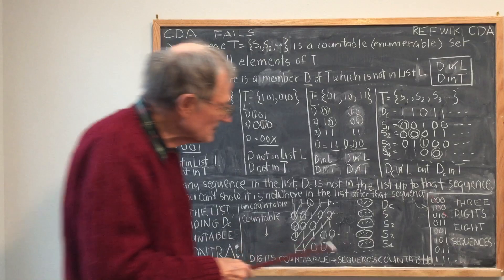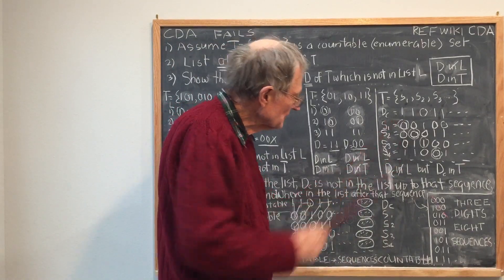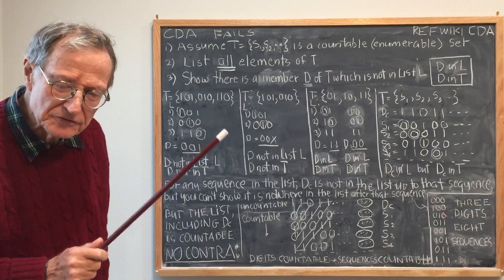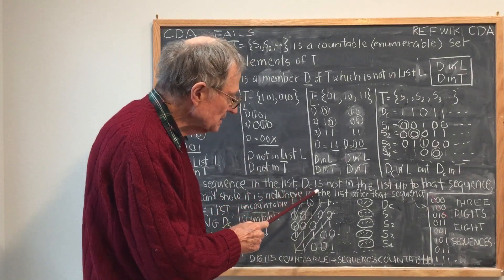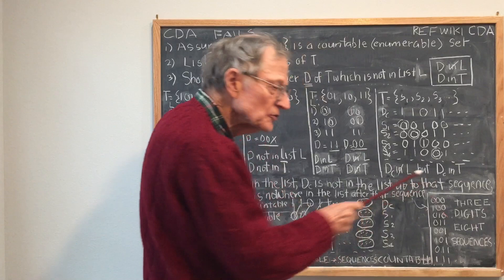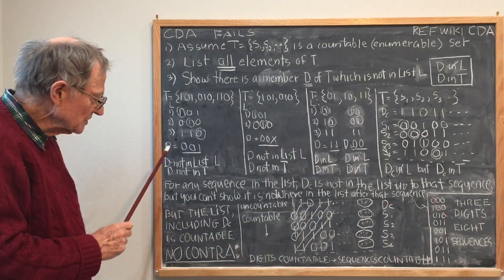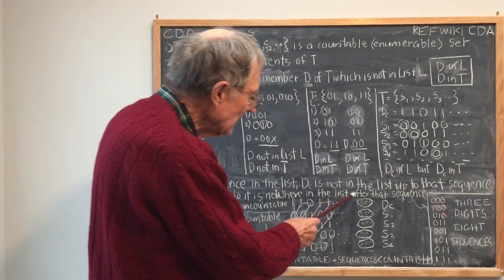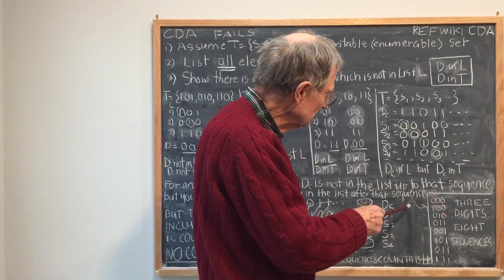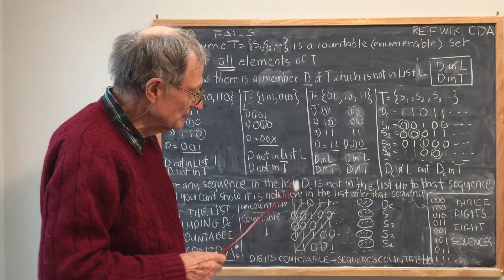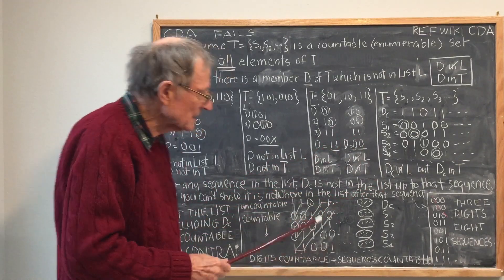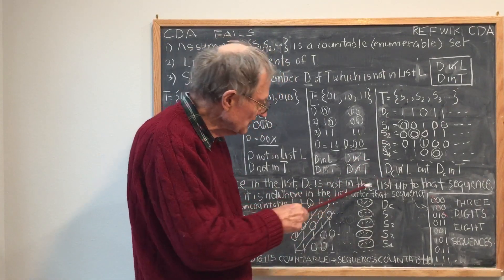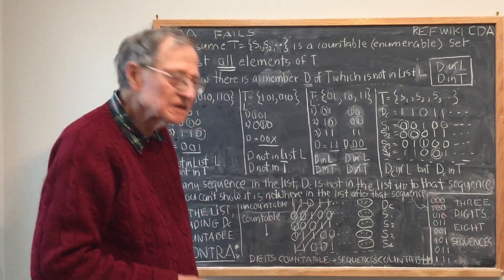But the problem is I was a little lax in how I described where D fit in. What I really have shown is that for any sequence in the list, D sub C is not in the list up to that sequence. What you can't show, and what I haven't shown, is that it is nowhere in the list after that sequence. So this conclusion — D sub C is unequal to L — is not really valid so far. The only way I can arrive at this conclusion valid for the entire list is if the list is square.